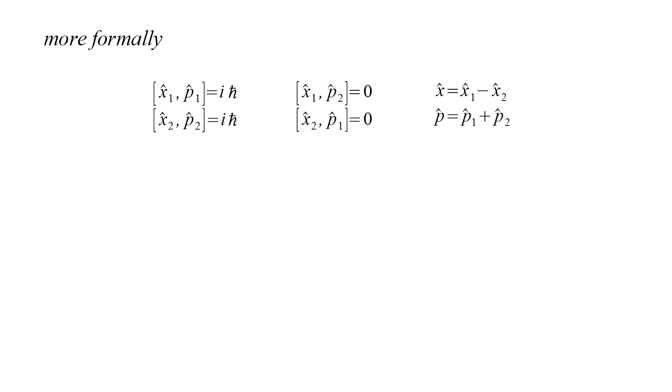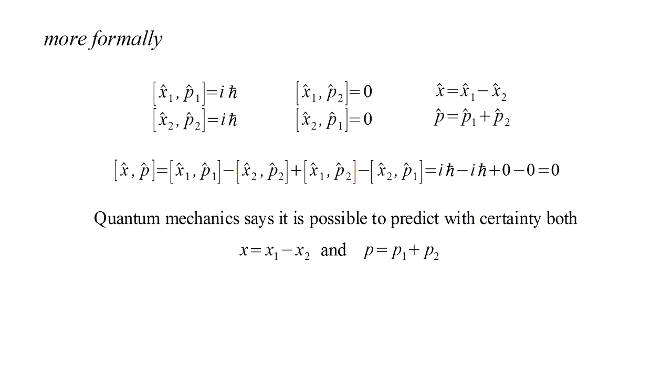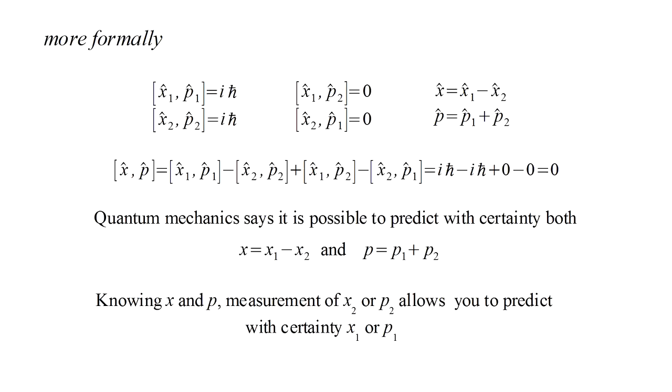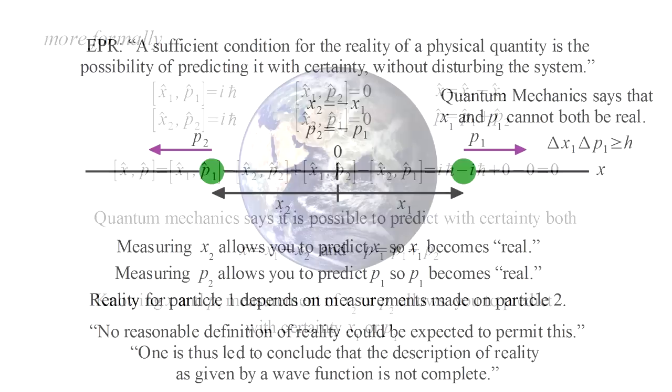Now, form the operator X-hat as the difference of the position operators. X-hat represents the distance between the particles. Form P-hat as the sum of the momentum operators. P-hat represents the total momentum of the two particle system. We can algebraically work out the commutator of X-hat and P-hat and we find that it's zero. Therefore, quantum mechanics says that for two particles, it's possible to predict with certainty the difference of their coordinates and the sum of their momenta. If we know these values, then measurement of X-two or P-two allows us to predict with certainty X-one or P-one, and the EPR argument then follows as before.